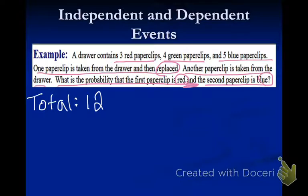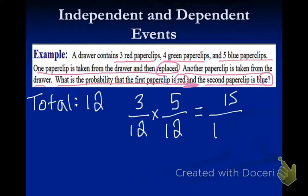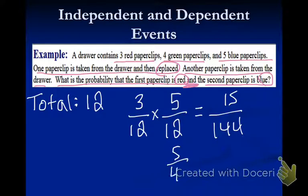We need to figure out the first probability — that the first paperclip is red. The probability that the first paperclip is red is three out of twelve. Then the probability that the second paperclip is blue is five out of twelve. Because this is 'and,' I'm going to multiply my answers together. That gives me fifteen out of one hundred forty-four. I can simplify both by three, so one forty-four divided by three is forty-eight, giving me five out of forty-eight.